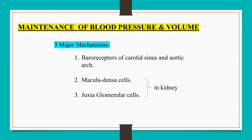The maintenance of fallen blood pressure and volume is mainly carried out by three major mechanisms involving baroreceptors of the carotid sinus and aortic arch, macula densa cells, and juxtaglomerular cells. Macula densa cells and juxtaglomerular cells are present in the kidney. Renin is released into the circulation primarily by these three mechanisms.